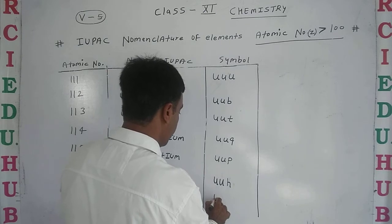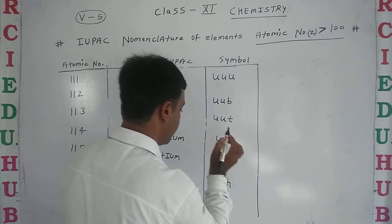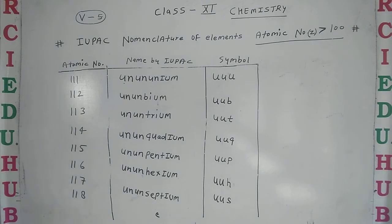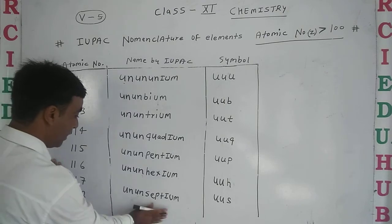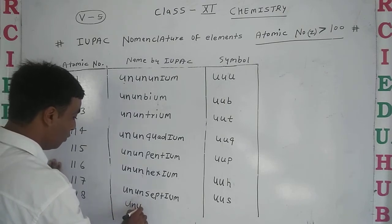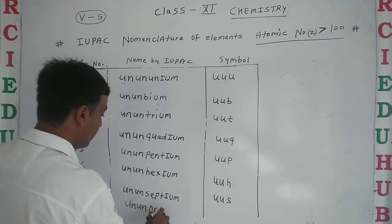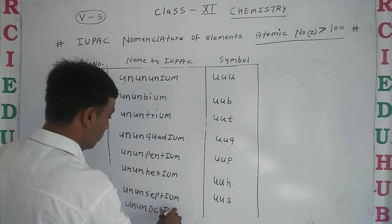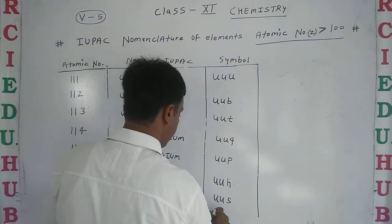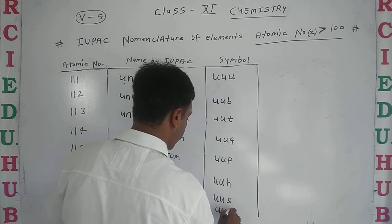Last is 118 - the last element number in the modern periodic table. For 8, we use 'oct' with suffix '-ium' - ununoctium. Symbol is U U O - Uuo.